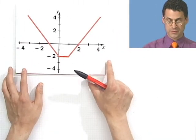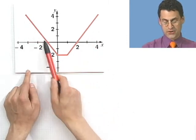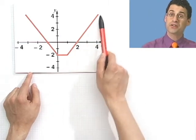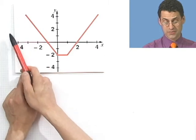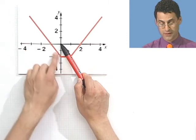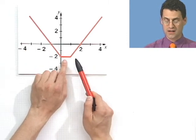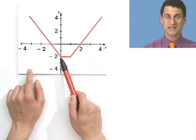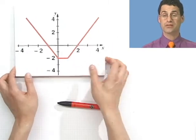Here's some more kinky stuff. It's decreasing, then it's constant for a little bit, and then increasing again. So: decreasing from negative infinity all the way up to x equals 0; then from x equals 0 to x equals 1, it's constant; and then from x equals 1 onward, the function is increasing.